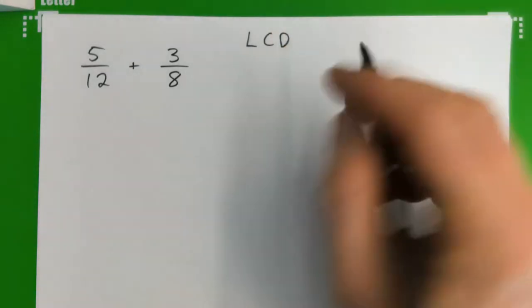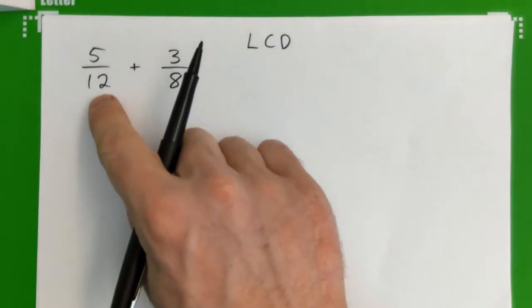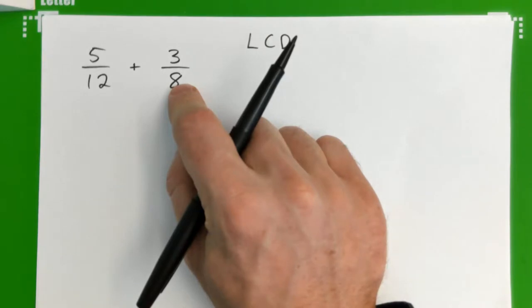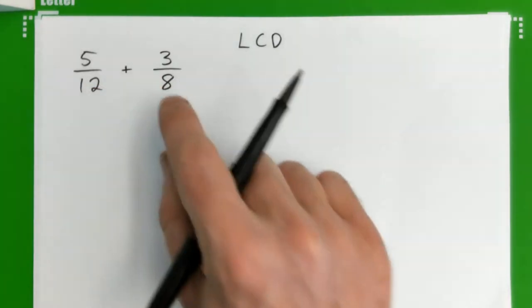Now, that is the smallest number, the smallest multiple of 12 and 8. So we're thinking, what is the smallest multiple of 12 and 8?